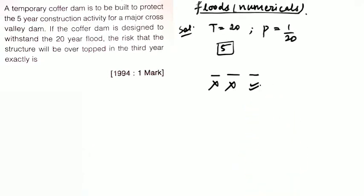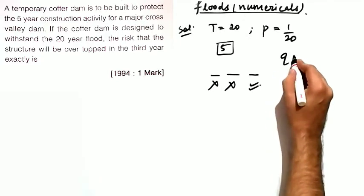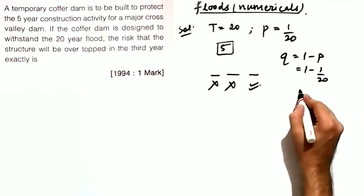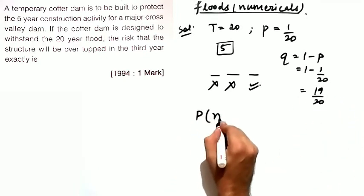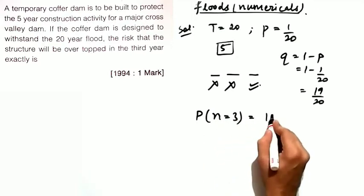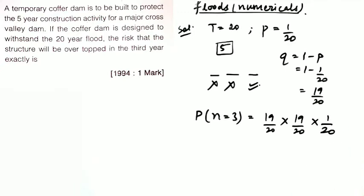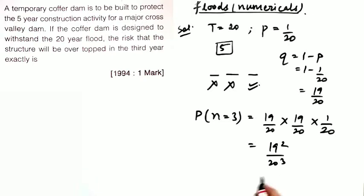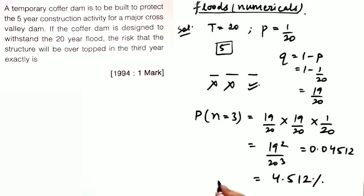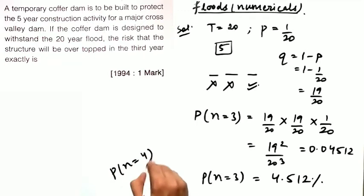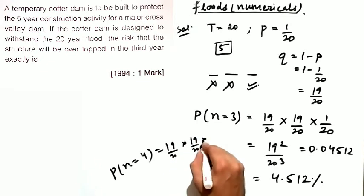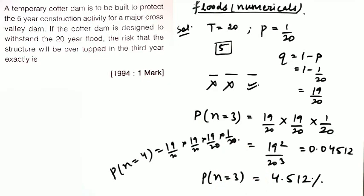In the first year there will be no flood, in the second year also no flood, but in the third year the flood must occur. The probability that the flood will not come is 1 - p = 1 - 1/20 = 19/20. So the probability that the structure is overtopped exactly in the third year is (19/20)² × (1/20) = 19²/20³ = 0.04512, or 4.512%. For n = 4 it would be (19/20)³ × (1/20).